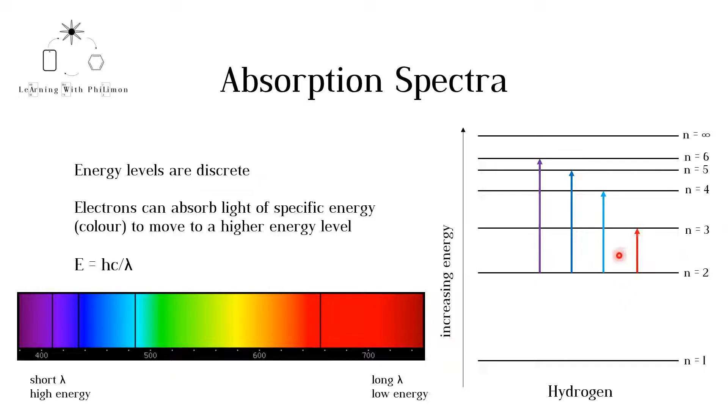Light blue is absorbed for the transition between energy levels 2 to 4. Dark blue is absorbed for the transition between energy levels 2 to 5. And finally, violet light is absorbed for the transition between energy levels 2 to 6.